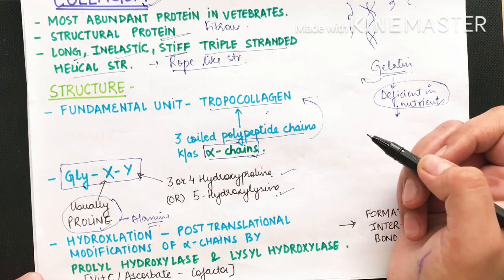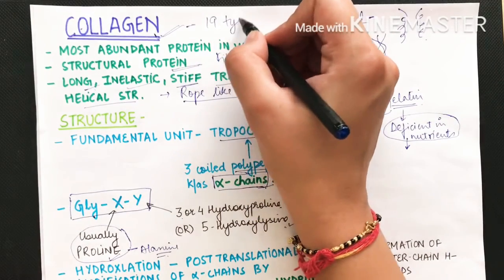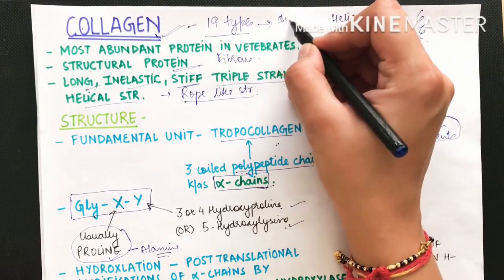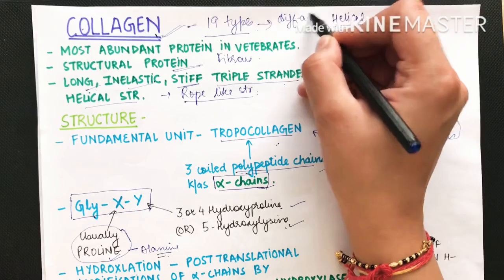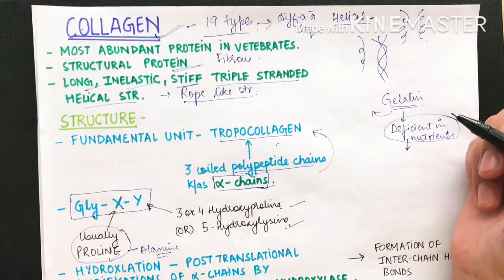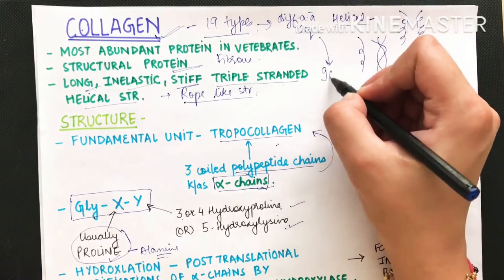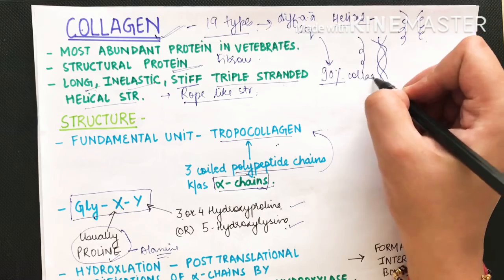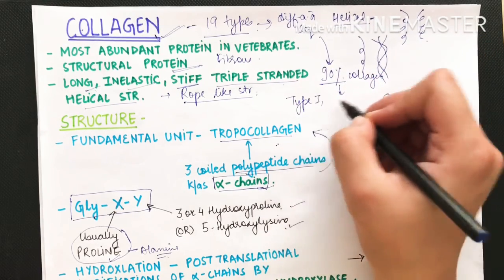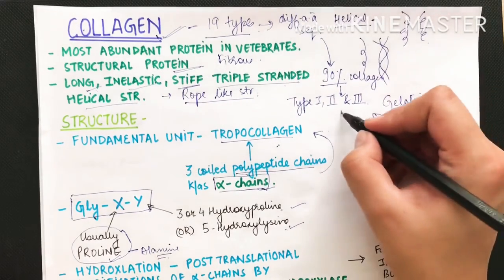In our vertebrate system we have around 19 types of collagen, arising due to differences in amino acid sequence. The most abundant types are type 1, type 2, and type 3, which together form 90% of the body's collagen.